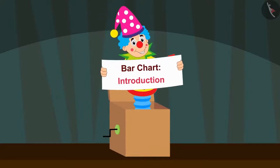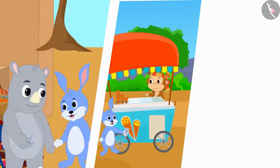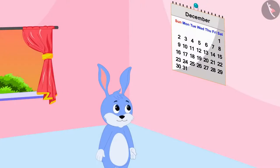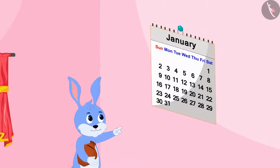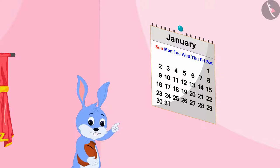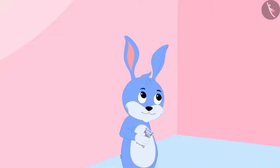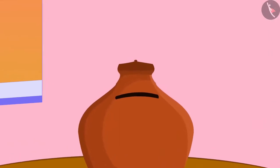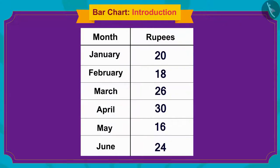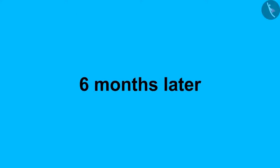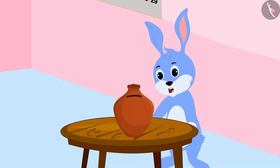In this video we will learn about bar charts. Bunny started spending a lot of money every month, due to which by the end of the month all his money would be over. He decided to start saving money every month. He would put the money saved each month in a piggy bank and write the amount saved in a table in his notebook. In no time, six months passed by.